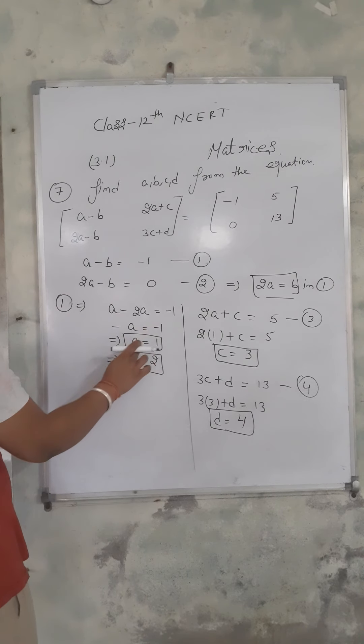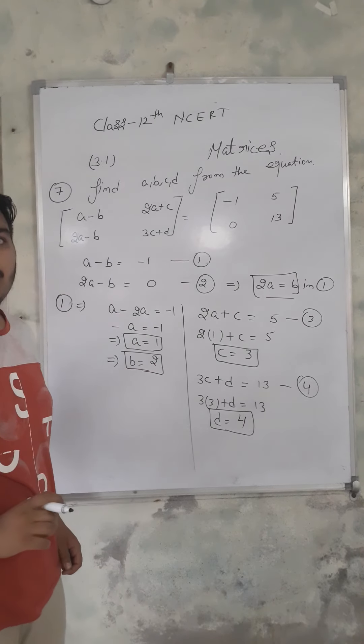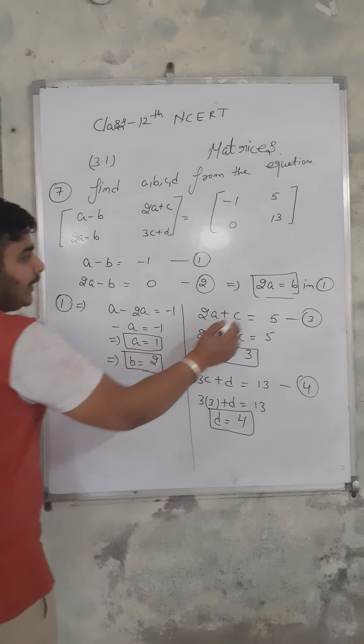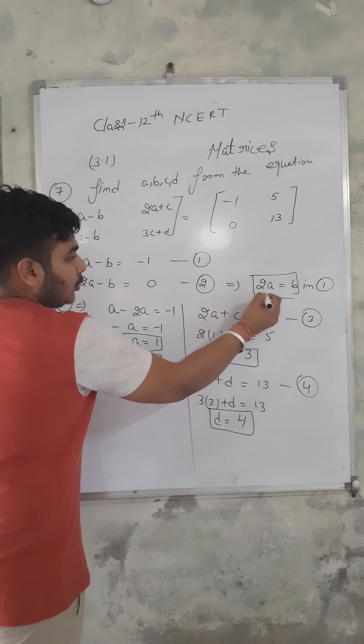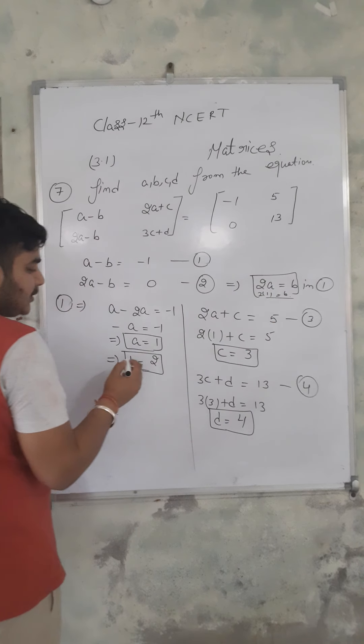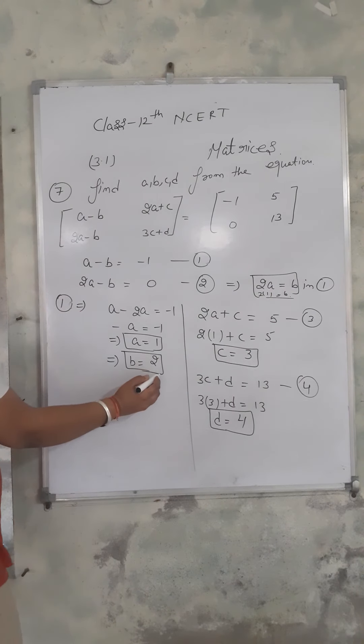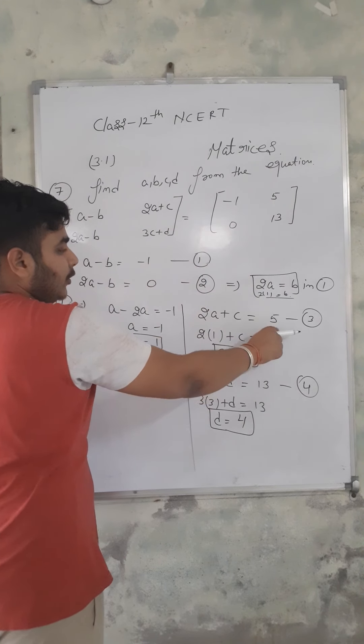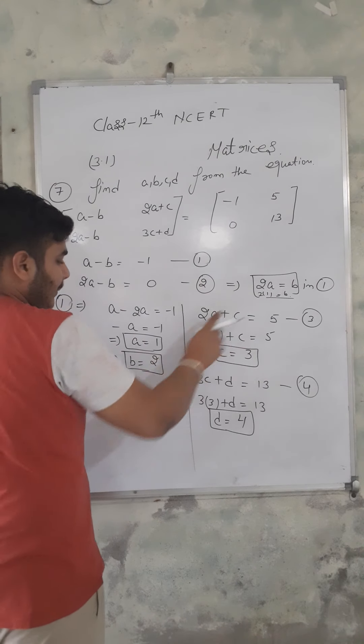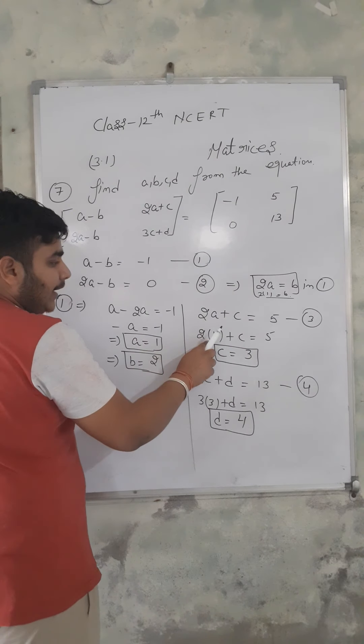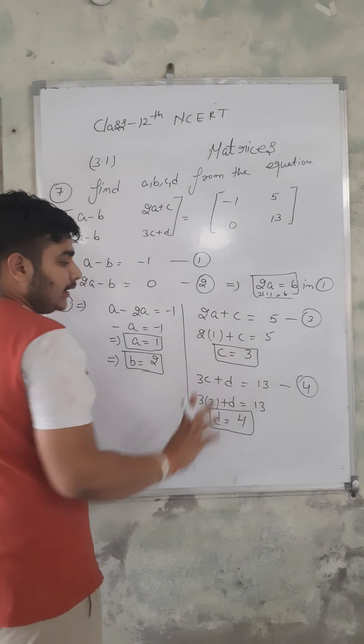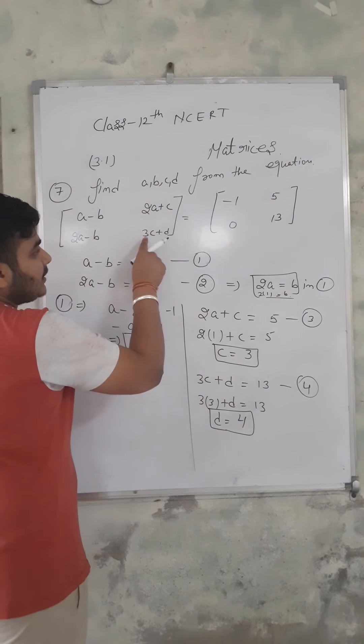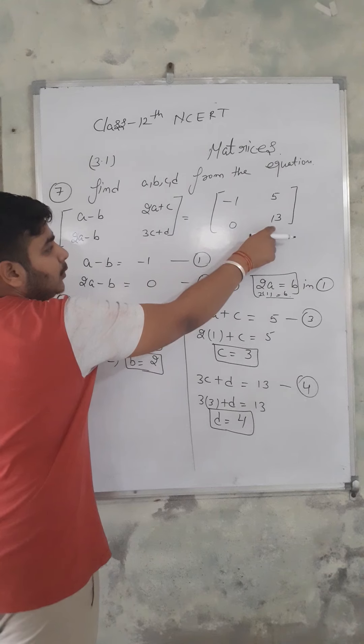Subtracting these equations gives minus a equals minus 1, so a equals 1. If a is 1, then 2 times 1 equals b, so b equals 2. According to the condition, c equals 1, and from another equation, c also equals 3.